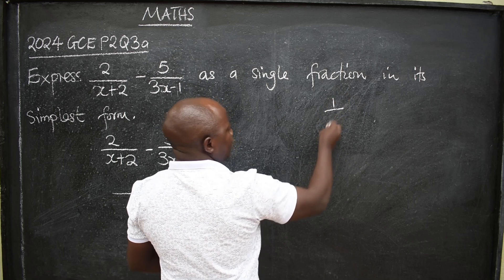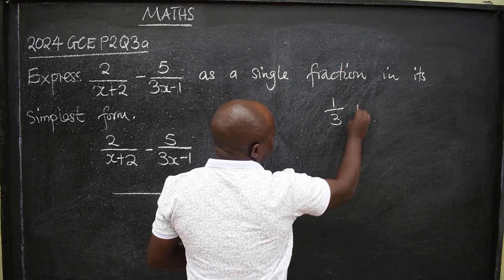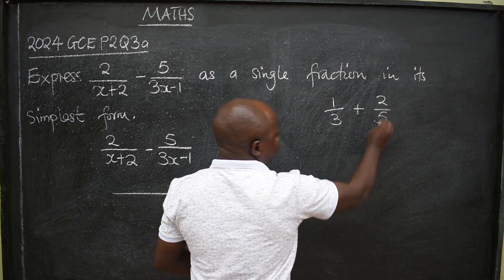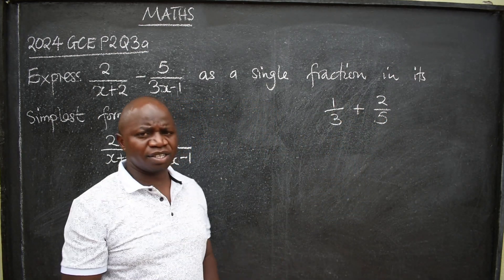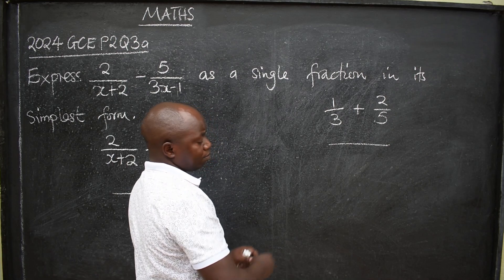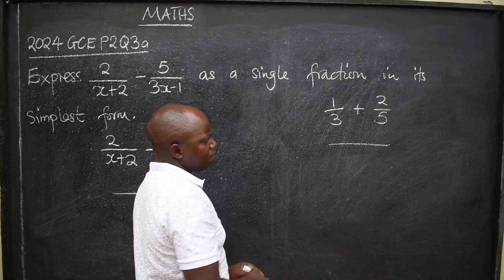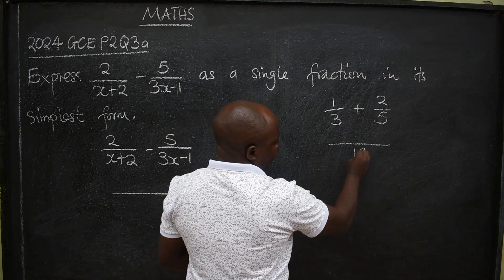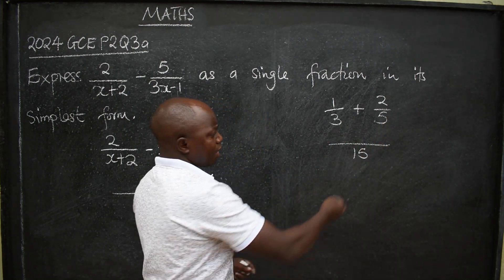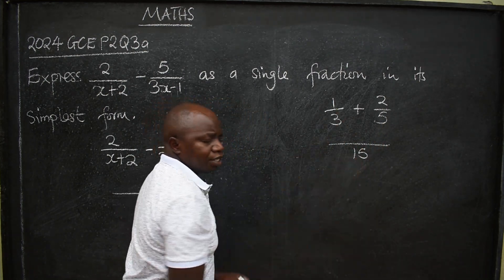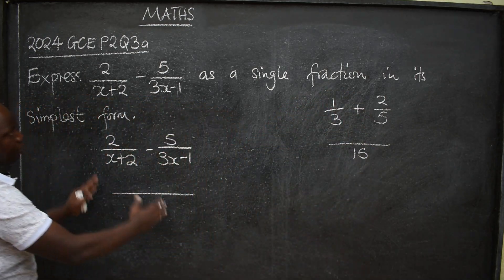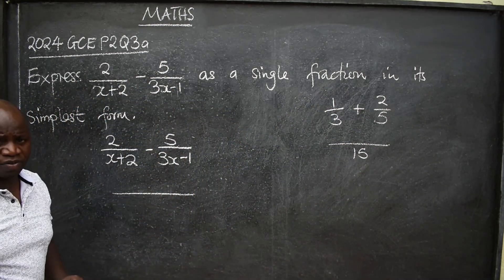When I have 1 over 3, let's say plus 2 over 5, if I ask you to find the answer to that, definitely you'll be able to look for the lowest common multiple, which will be 15 in this case. Or simply multiply 3 times 5, and that will give you 15, and you'll be able to carry out. The same concept here must be applied when you are given such kind of questions.